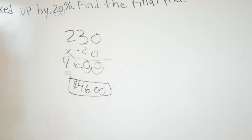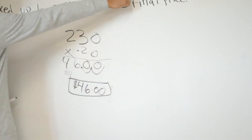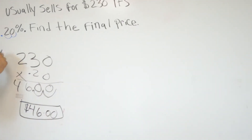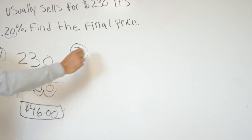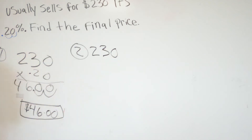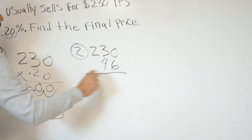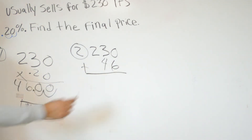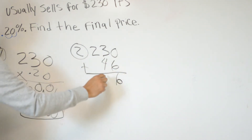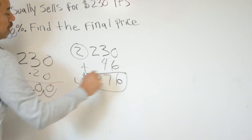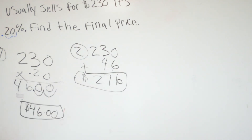That gives us $46 — that's the markup amount, not the final answer. Step 2 is to add the markup to the original price: $230 plus $46. Because the bicycle is going to cost more money now that everyone wants it. So 6 plus 0 is 6, 4 plus 3 is 7, bring down the 2 — you're going to be paying $276 for the bicycle.